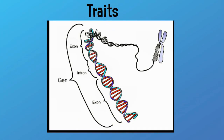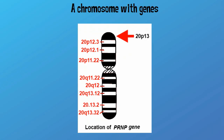Traits are characteristics that can be passed from one generation to another. A gene is a portion of DNA that contains the genetic code for a trait. Genes are located on chromosomes.